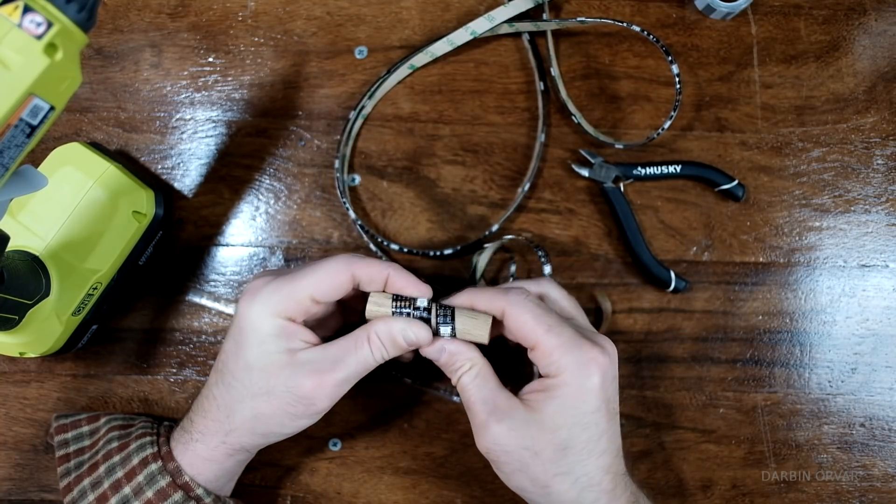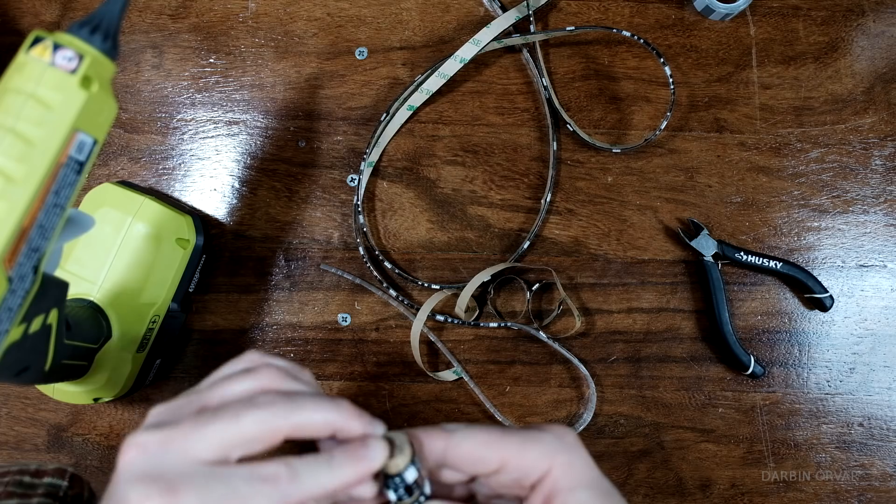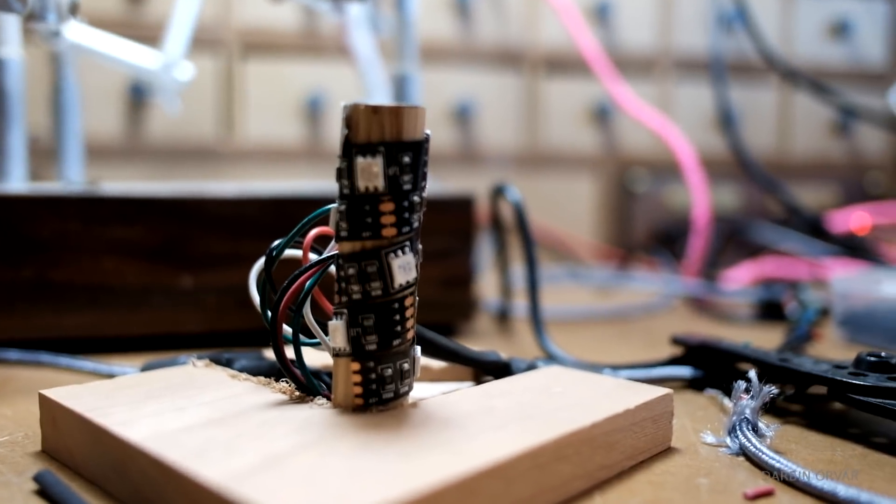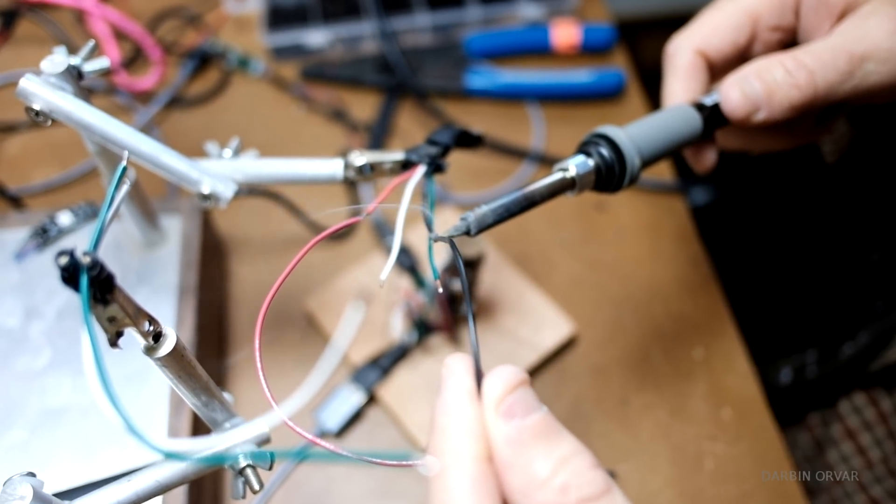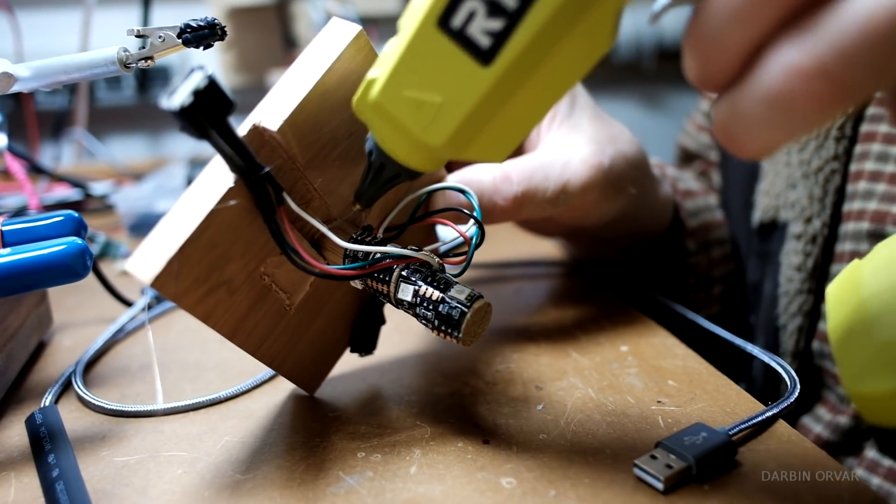To attach the light, we glued on the light strip onto a dowel, with some hot glue for reinforcement. And then to secure the dowel and the USB connections in the bottom piece, we used hot glue.